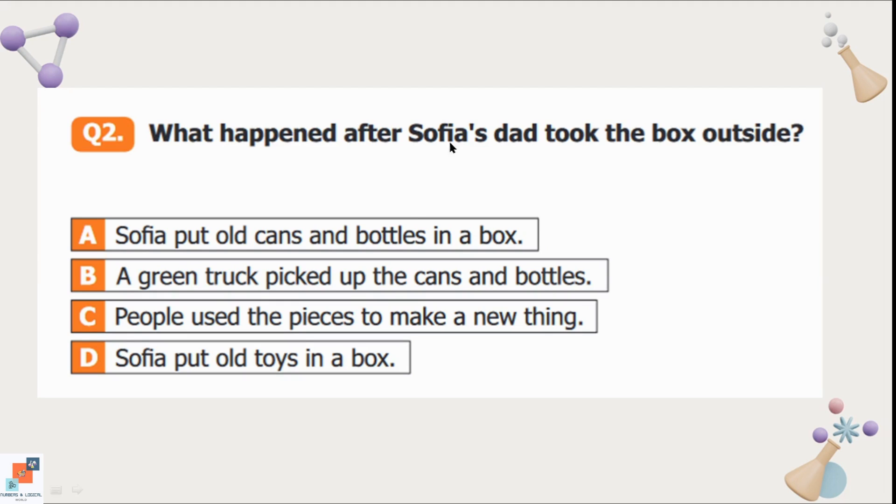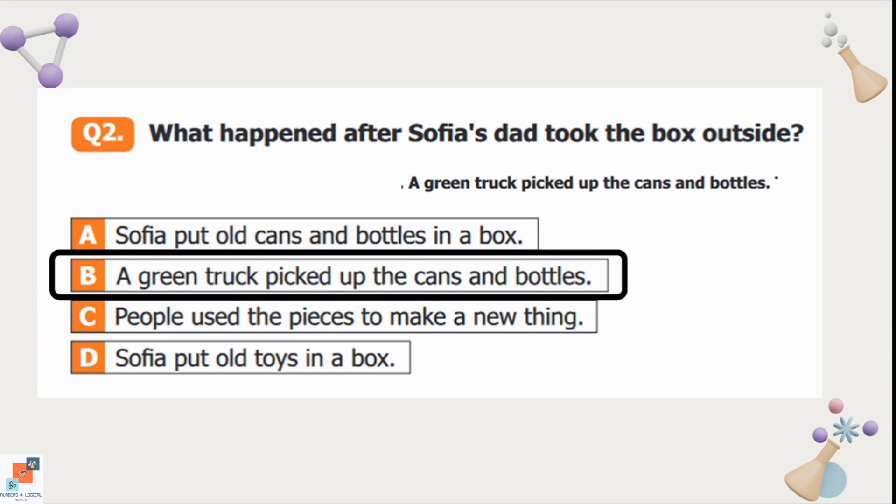Question number 2: What happened after Sophia's dad took the box outside? Option A is Sophia put old cans and bottles in a box. B is a green truck picked up the cans and bottles. C is people used the pieces to make a new thing. Option D is Sophia put old toys in a box. It was mentioned in the paragraph a green truck picked up the cans and bottles. So option B is the correct option.